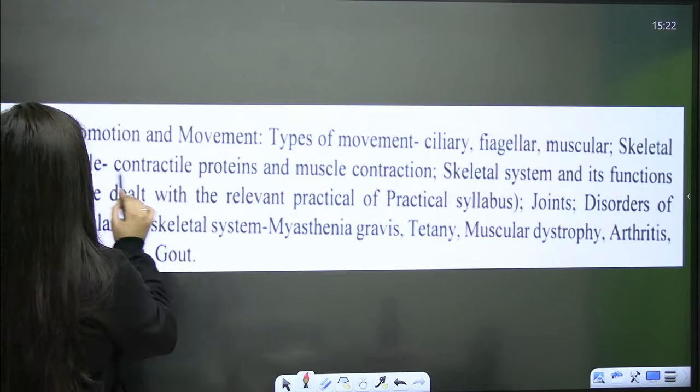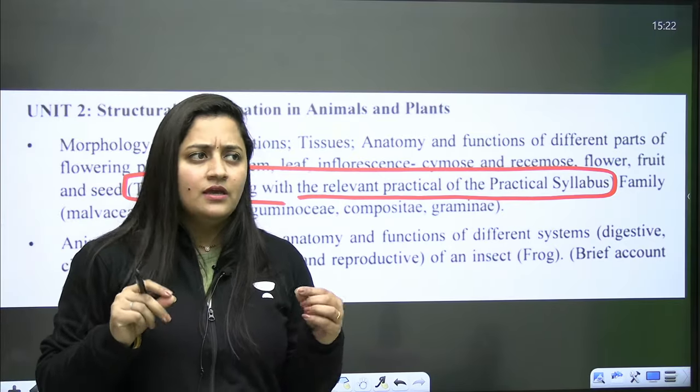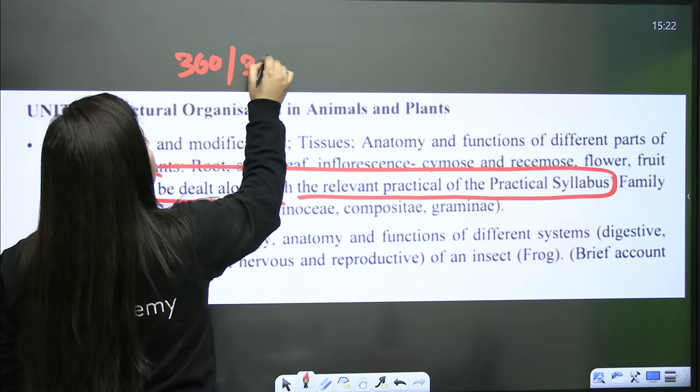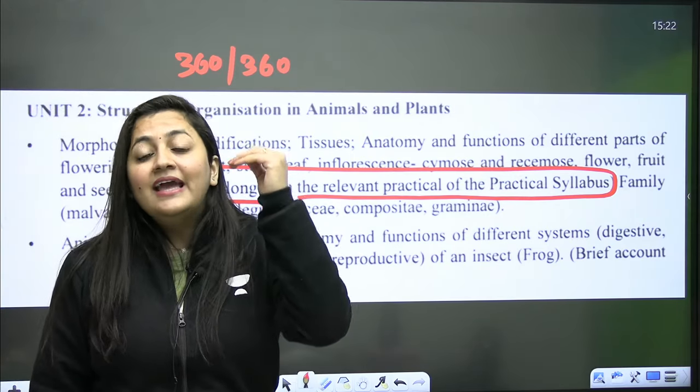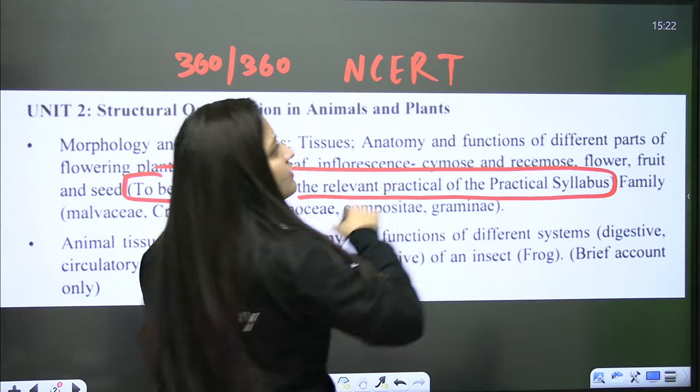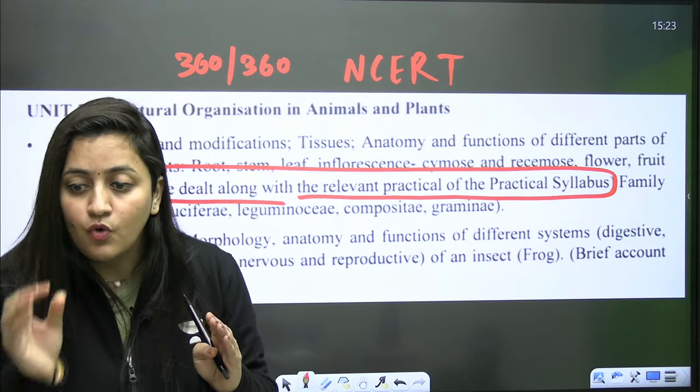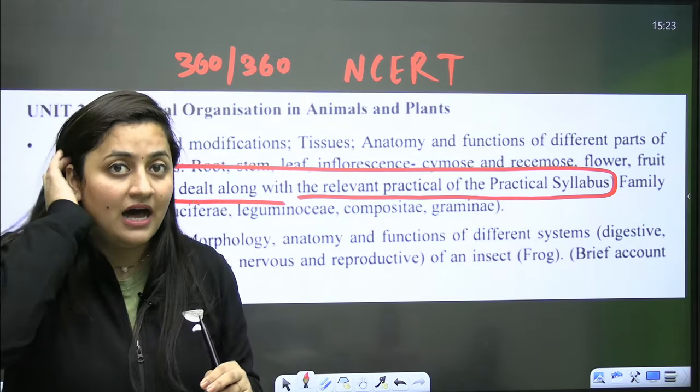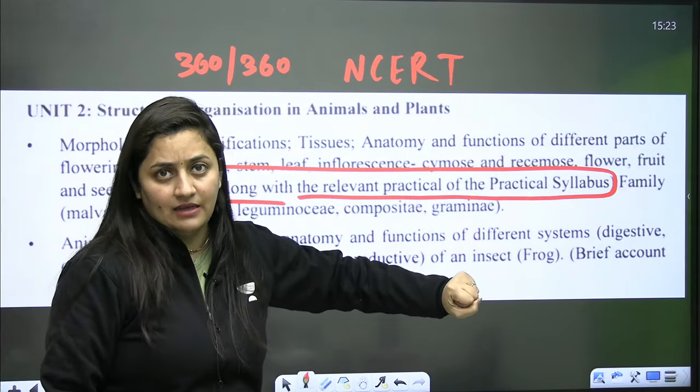Even in locomotion and movement, the same thing is mentioned. Most of the time students ask whether they should focus on such things or ignore it. Let me tell you students, if you are willing to score 360 out of 360, you know what we have to do. First, we need to revise the complete biology, complete NCERT biology. In that NCERT, we are not allowed to leave even the summary part, the theory part, the exercise questions, the description of the diagrams - not even a single word. If you really want to score 360 out of 360, basically no stone should be left unturned. That should be our attitude.